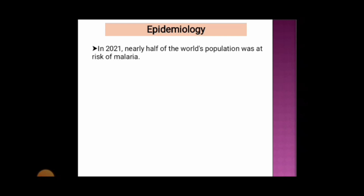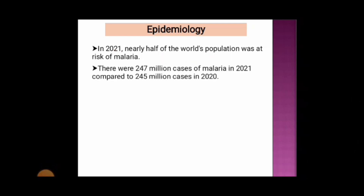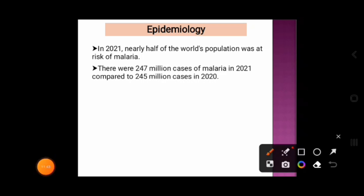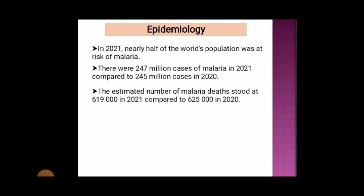According to the World Health Organization (WHO) 2023 report, in 2021 nearly half the world's population was at risk of malaria. According to the World Malaria Report, there were 247 million cases of malaria in 2021, compared to 245 million cases in 2020. The estimated number of malaria deaths stood at 690,000 in 2021, compared to 625,000 in 2020.